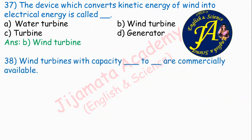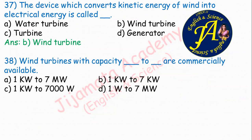Wind turbines with capacity dash to dash are commercially available. Options are 1 kilowatt to 7 megawatt, 1 kilowatt to 7 kilowatt, 1 kilowatt to 7000 watt, 1 watt to 7 megawatt. Correct answer is option A: 1 kilowatt to 7 megawatt.